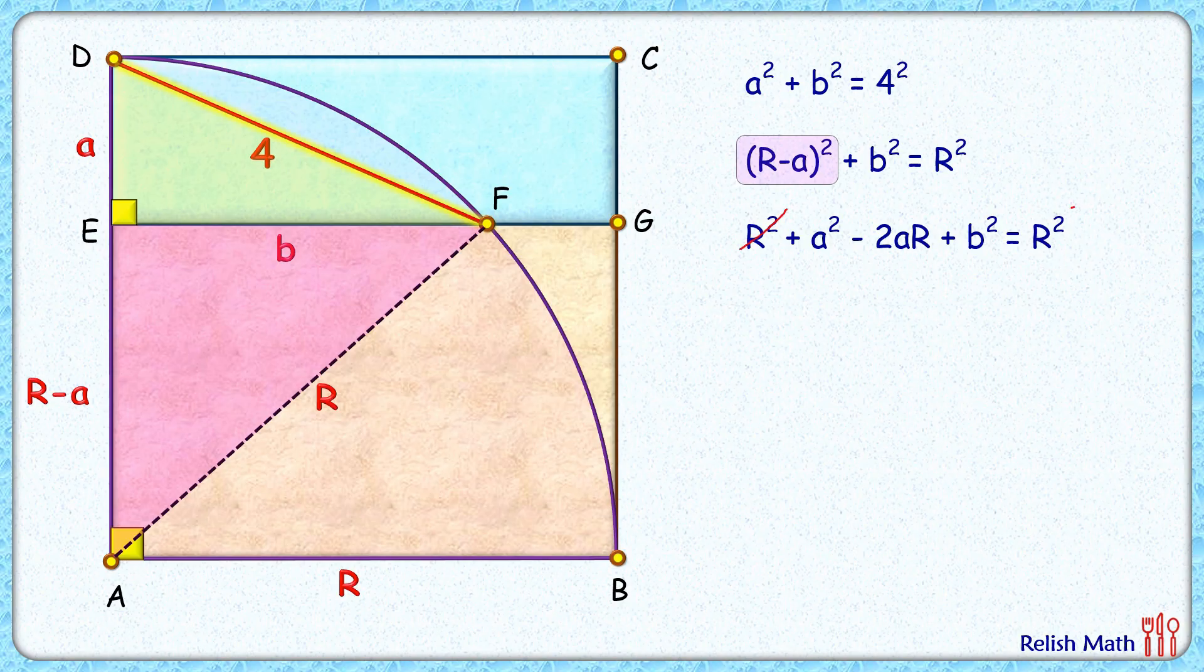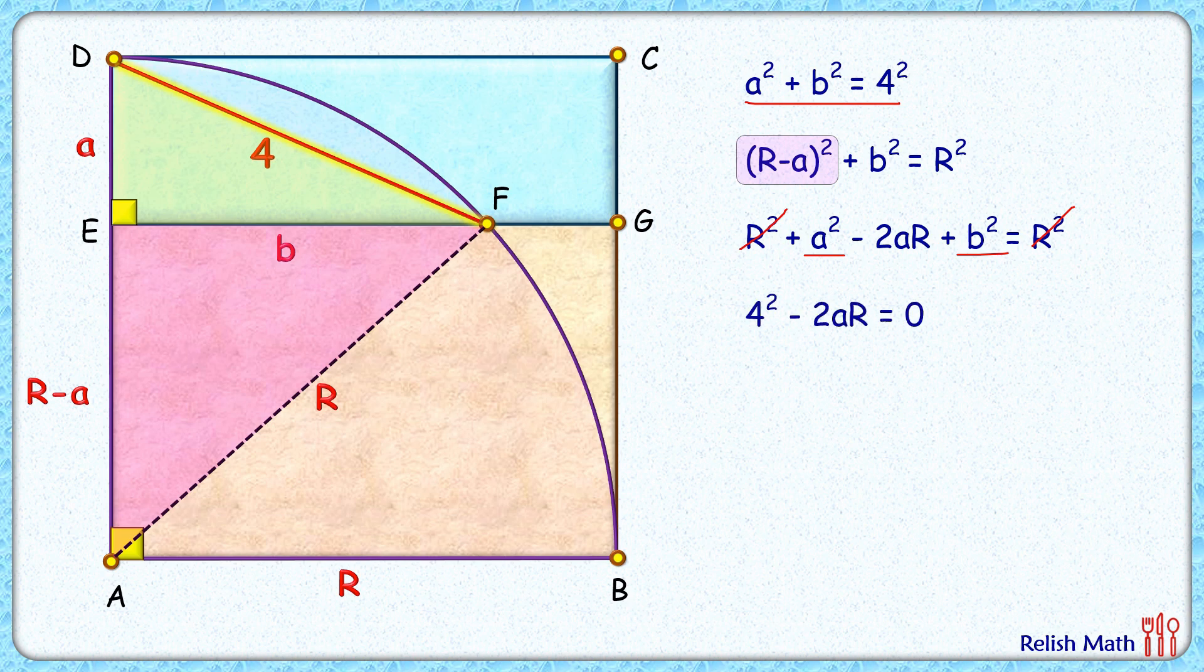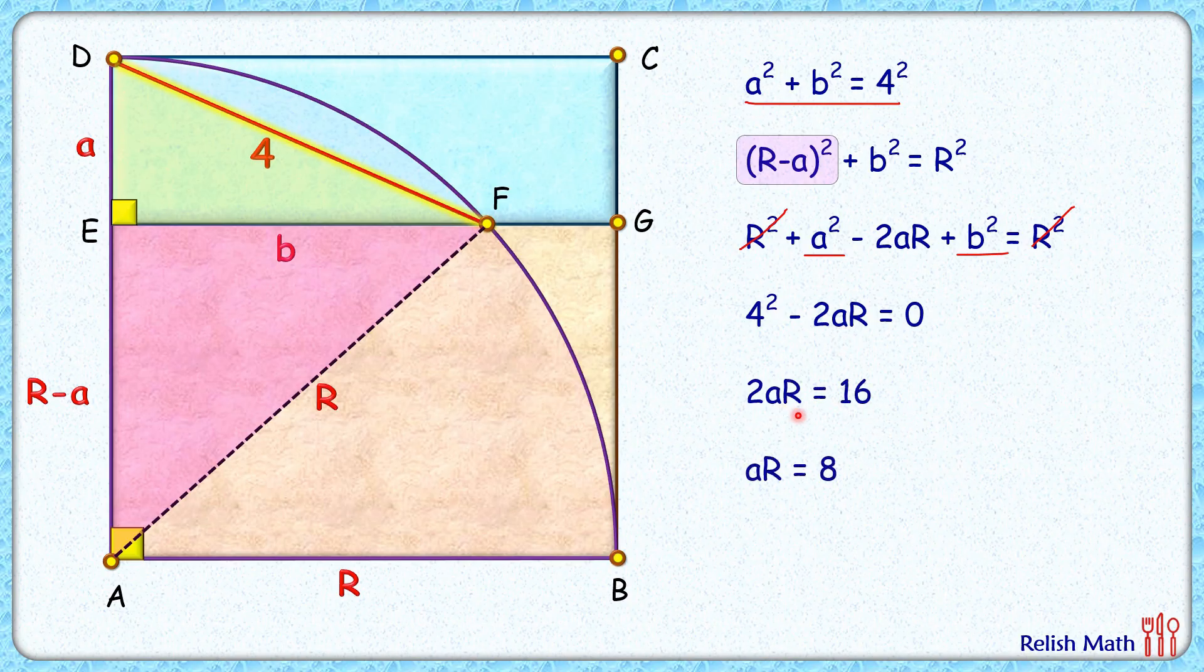Now solving the equation on both sides, R squared will get cancelled down, and A squared plus B squared that's nothing but 4 squared. So replacing this value, we'll get 4 squared minus 2AR is 0, or 2AR is 16, and A times R is 8. And here comes the magic: A times R is nothing but area of this rectangle, and thus area of the rectangle is 8 centimeter square, and that's our answer.